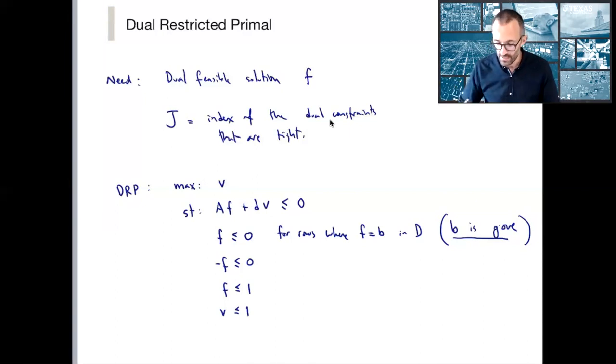Now B is, note that B is gone here. I didn't want to write that quite, let me put that over there just in parentheses. B is gone. F is less than or equal to zero. But this is for rows where the constraint F less than B in the original dual problem was tight. So in other words, for rows where F is equal to B in the dual. And then I still have all my constraints minus F less than or equal to zero.